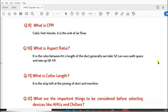Question 10: What is aspect ratio? It is the ratio between height and length of the duct. Generally we take 1:2, can vary with space and size up till 1:4.